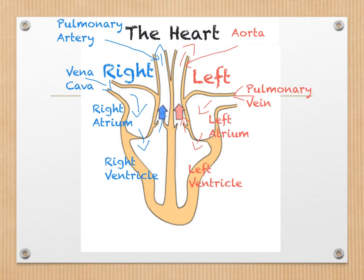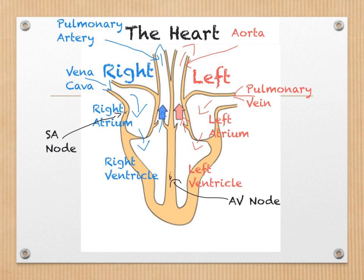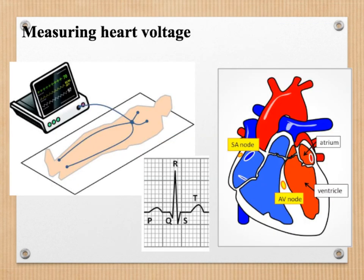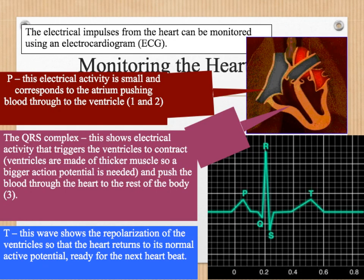To measure the action potential we need to measure two nodes: the SA node and the AV node. The SA node is located just to the side of the right atrium, whereas the AV node is located on the septum of the heart, which is between the right and left ventricles. We can then use this to measure the heartbeat by looking at the electrical potential generated by the SA node and the AV node. Because the heart contracts via the use of electrical impulses, we can monitor the action of the heart using an ECG, which is an electrocardiogram.